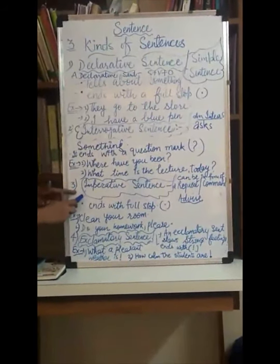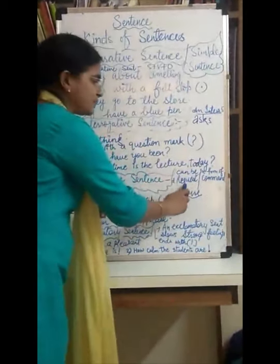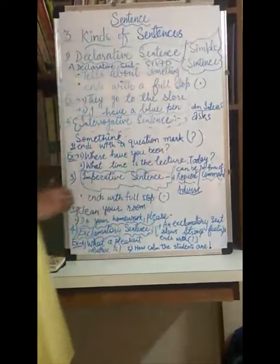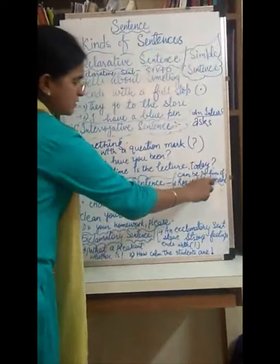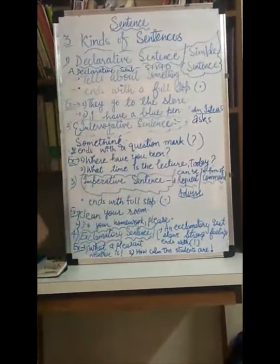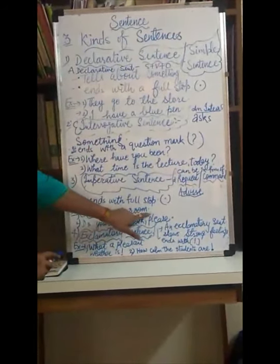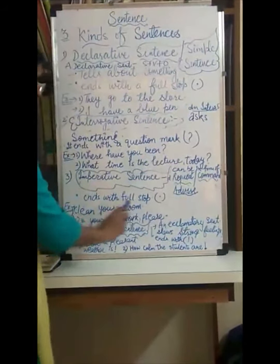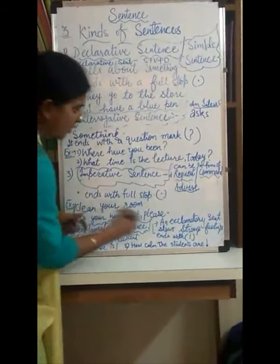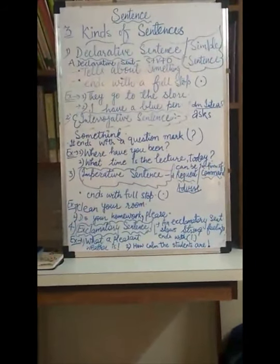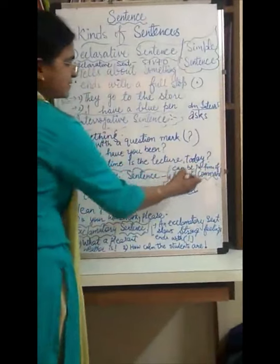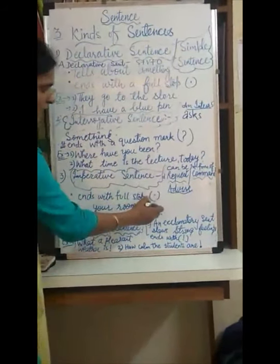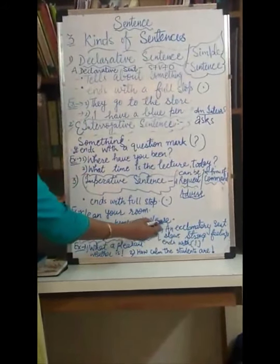Now we move on to the third kind: the imperative sentence. An imperative sentence can be in the form of a request, command, or advice, and it also ends with a full stop. First example: 'clean your room' — this does not include 'please,' so it shows a command. Second example: 'do your homework, please' — this shows a request. So imperative sentences can express a request, command, or advice.